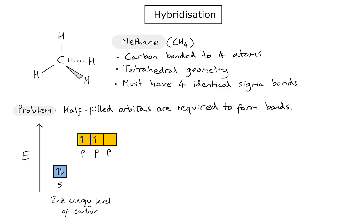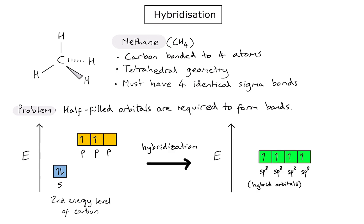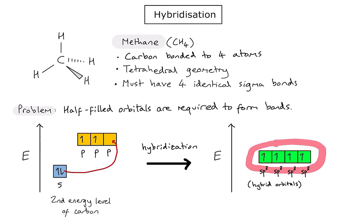The process of hybridization is a suggested explanation representing this process. Starting with an s orbital and three p orbitals, we do some kind of mixing or hybridization of those orbitals to form four identical orbitals with some intermediate energy between the s and p sub-levels. One electron is promoted to the empty p orbital, and then all four orbitals combine to form four identical orbitals of the same energy.